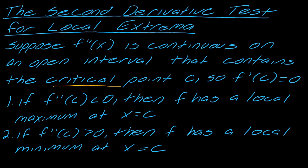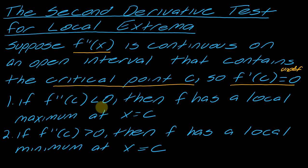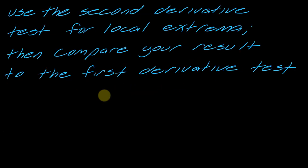To use this test you need to know your critical points — where f prime equals zero or is undefined — and you need the second derivative. If the second derivative at the critical point is negative, the function is concave down and you have a max there. If it's positive, the function is concave up and you have a min. Some people find it helpful to draw pictures to understand this.